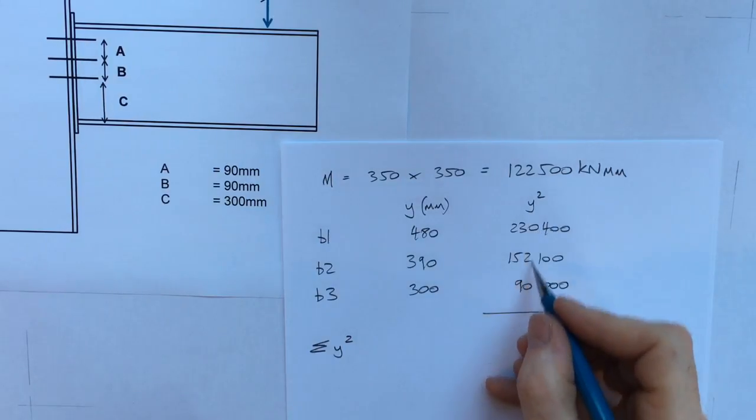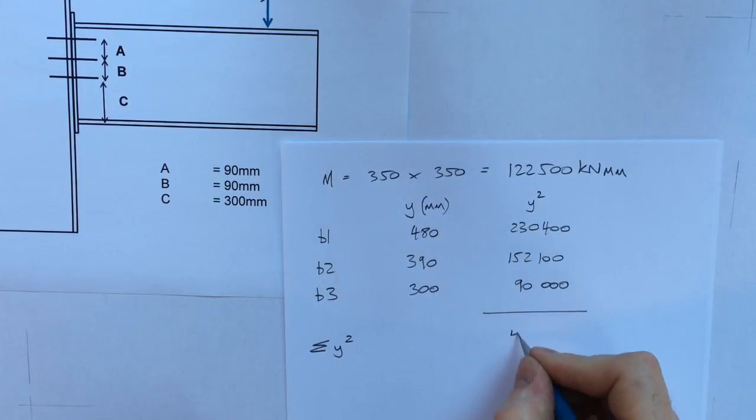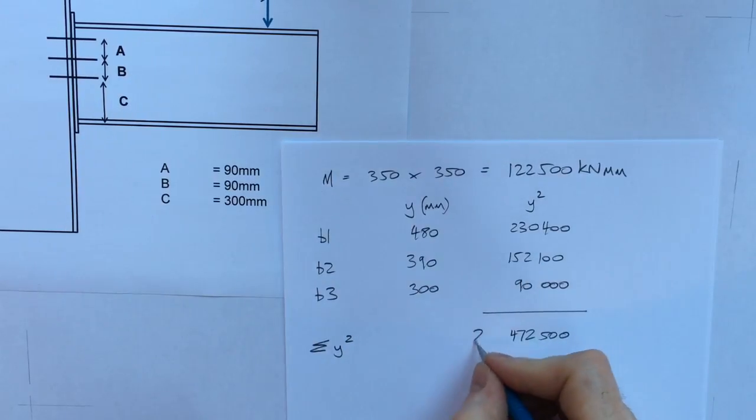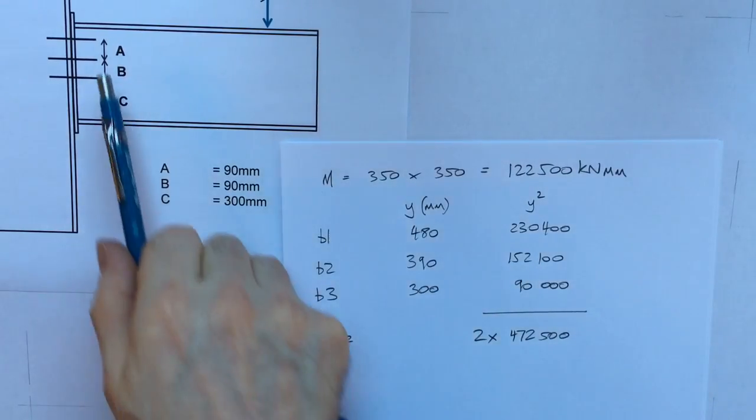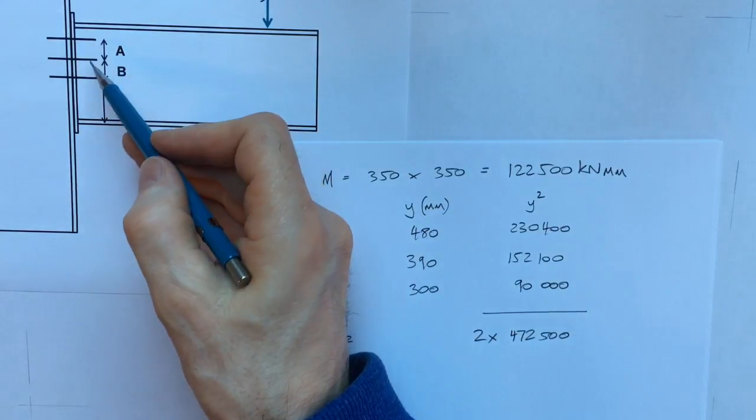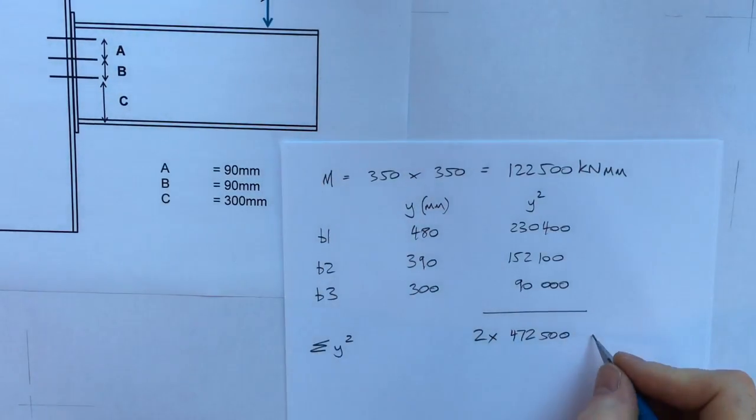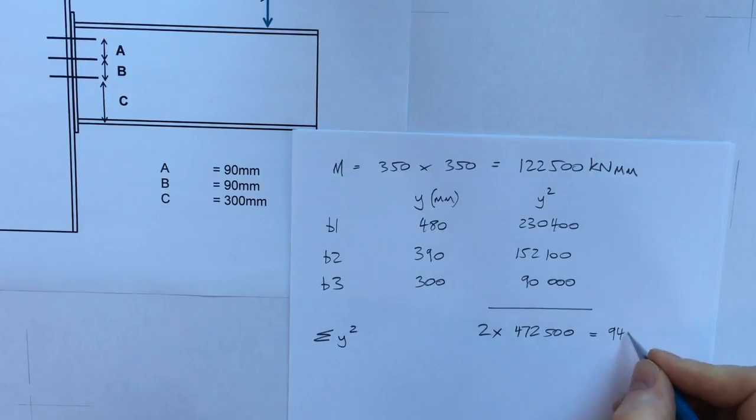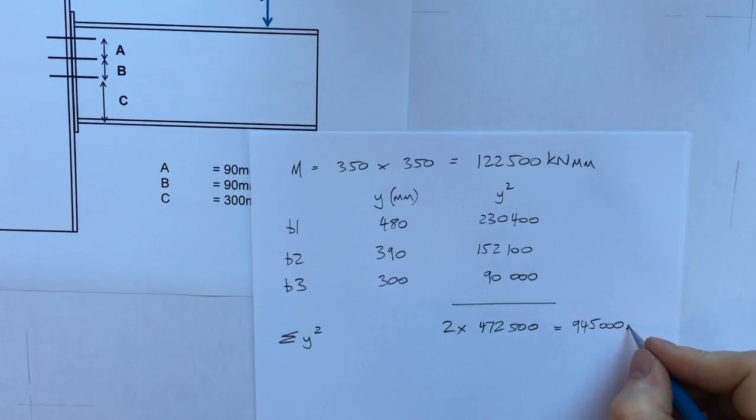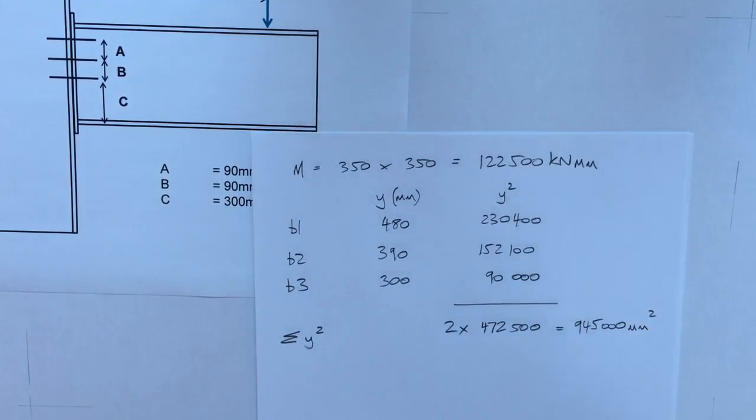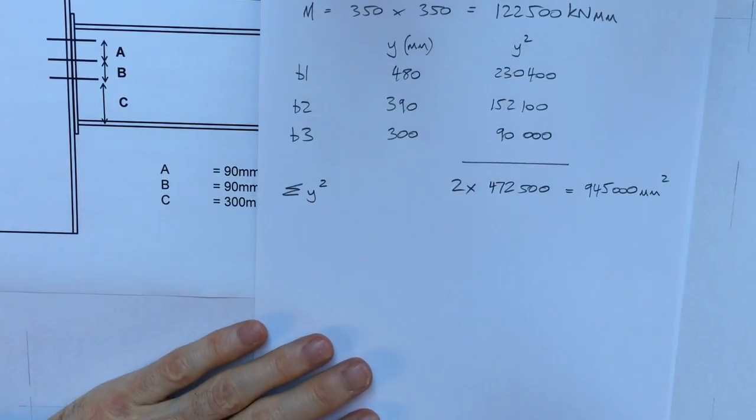The sum of all the y squareds is this lot added up together which gives me 472,500. Times two because the bolts are in pairs, in total there are six bolts. Add that lot together and it gets me 945,000 millimeters squared.